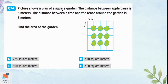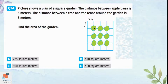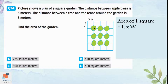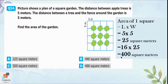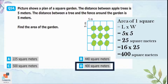Question 14: A square garden plan shows apple trees with 5 meters between each tree and 5 meters between a tree and the fence. Find the area of the garden. The area of one square is 5 times 5 equals 25 square meters. There are 16 such squares, so 25 multiplied by 16 equals 400 square meters. Option D is correct — the area of the garden is 400 square meters.